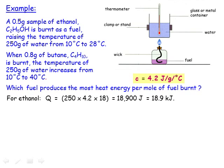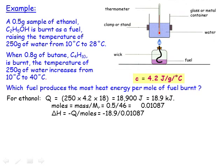Firstly, when the ethanol was burnt, we can work out that Q equals MC delta T, coming out at 18,900 joules, or 18.9 kilojoules. The moles of ethanol burnt is given by mass — 0.5 grams — divided by the relative formula mass of ethanol, which is 46, giving 0.01087 moles. Now we can work out delta H, which is minus 18.9 divided by 0.01087, equal to minus 1739 kilojoules per mole.